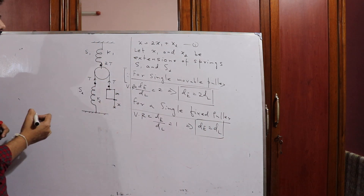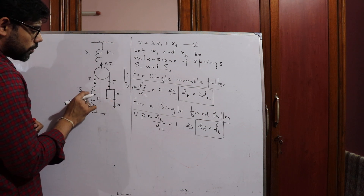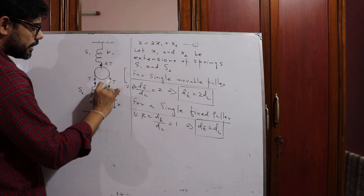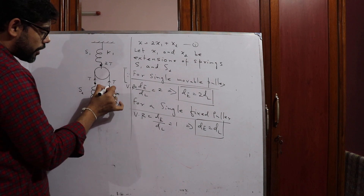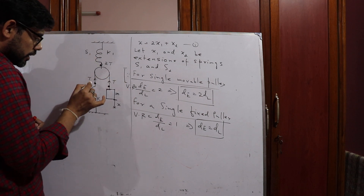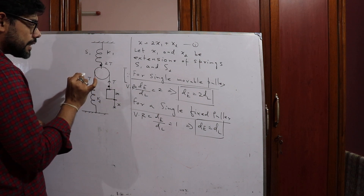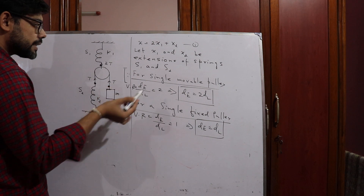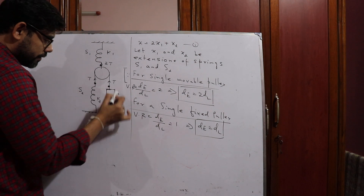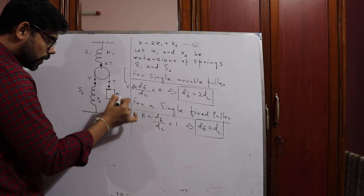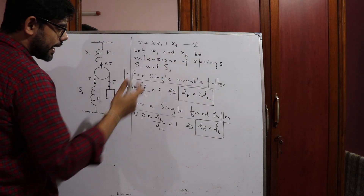Since dE = dL for a fixed pulley, for spring S2: when the spring has extended by x2, the effort point also moves by x2. So if this particular point has gone upward by x2, then the block's end also moves down by x2. That is why we add x2, giving the total displacement of the block as x = 2x1 + x2.